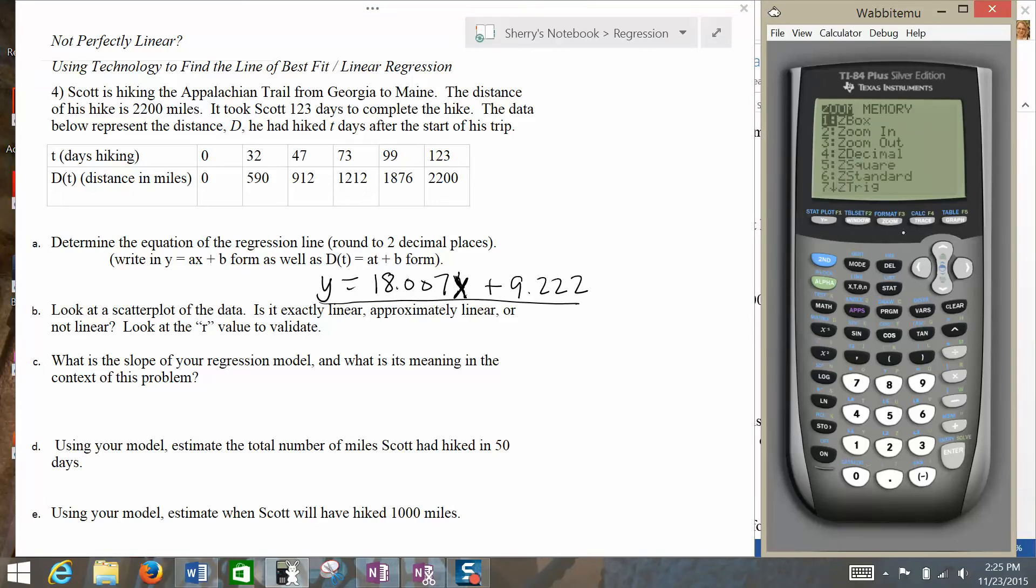And then we want to go to Zoom and choose, there's an option here, you can arrow down, it says Zoom Stat. There it is, Option 9 on my calculator here.